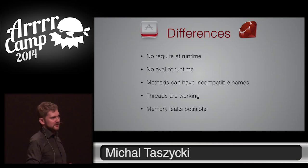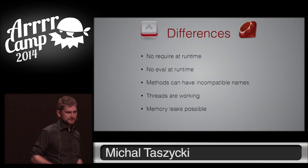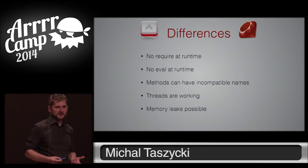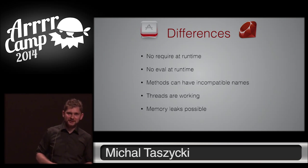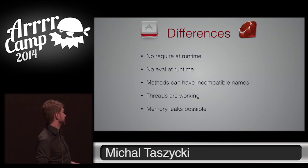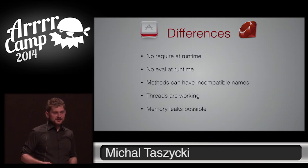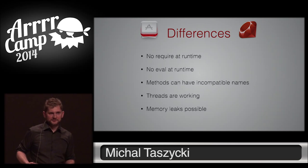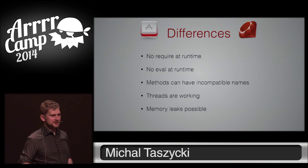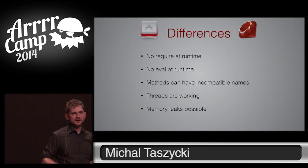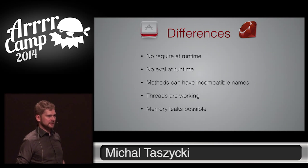But we can still use define_method using block and things like that. There is a difference with Ruby MRI in that threads are actually working. So if you port things from MRI to RubyMotion and use threads, you might find some bugs you haven't found before. And it doesn't have garbage collection — it uses automatic reference counting in Objective-C. So memory leaks are actually possible. They're not that common right now, but if you use blocks and events, it's possible to have one.